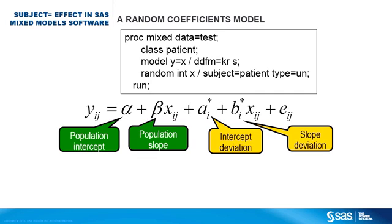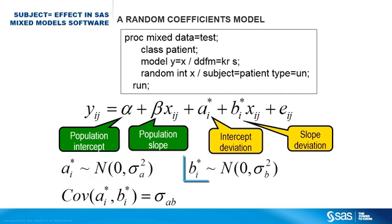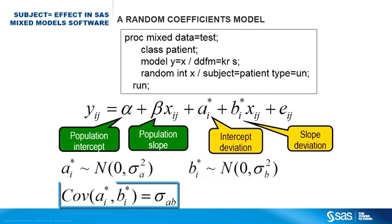The model statement estimates the population intercept and population slope. The random statement estimates the intercept deviation and the slope deviation for subject i. We assume the intercept deviation i* follows the normal distribution with mean zero and variance sigma a squared. The slope deviation bi* follows the normal distribution with mean zero and variance sigma b squared, and the covariance between the two random effects is sigma ab.